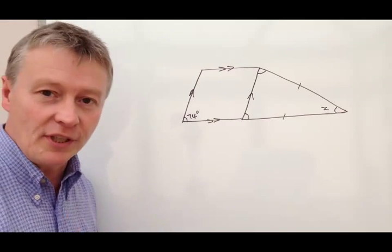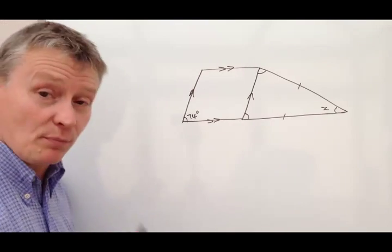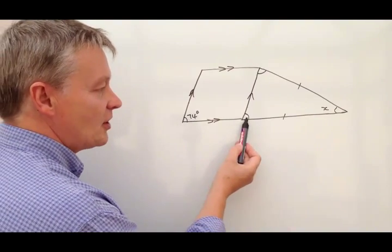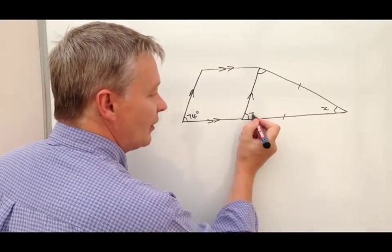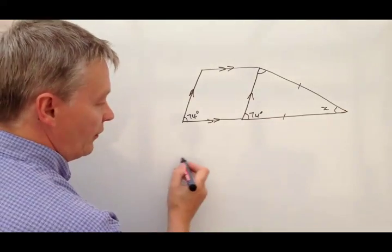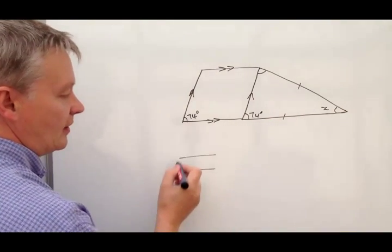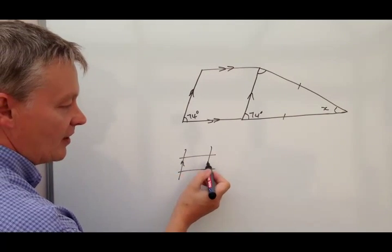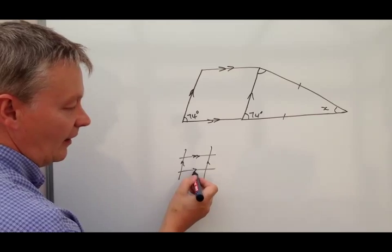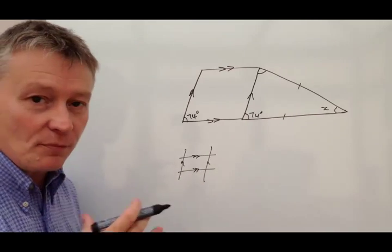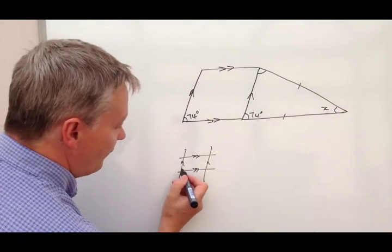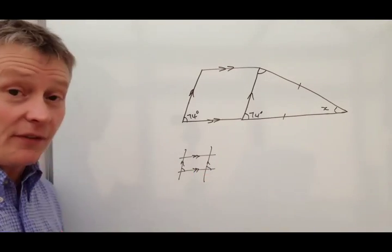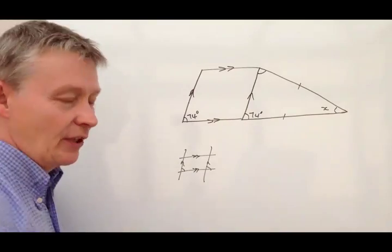Okay, so the little bit of angle properties that you need to know is what they call corresponding angles. So this is 74 degrees, and actually this is 74 degrees as well. So what we've got is two parallel lines, okay? It's a bit like that, isn't it? So this is parallel and this is parallel. Corresponding angles tells us that if this must be 74 and this, then this will be 74 as well. That's what we've used there.